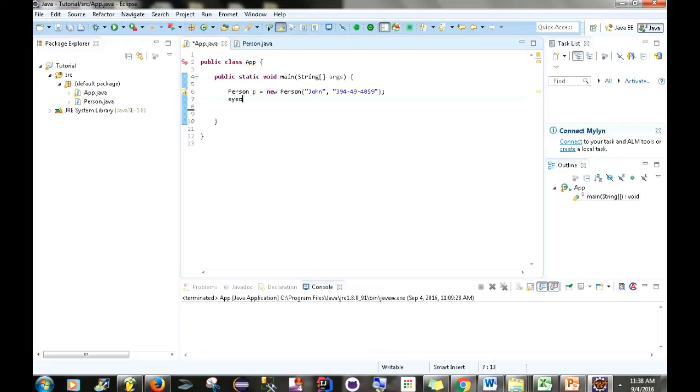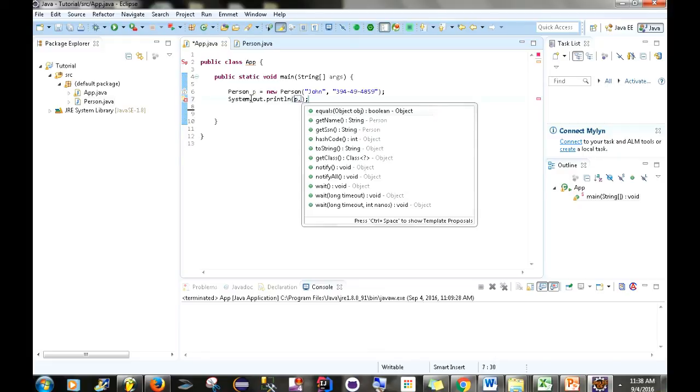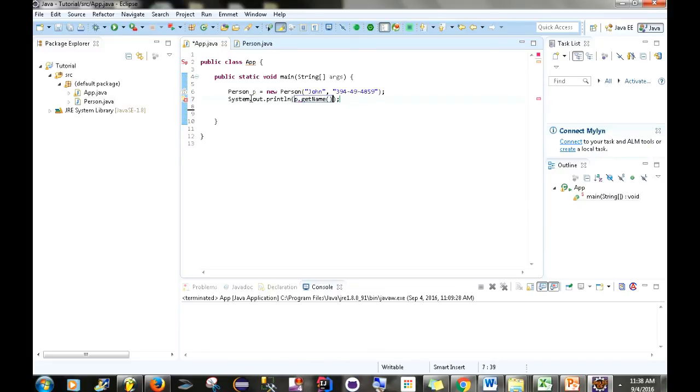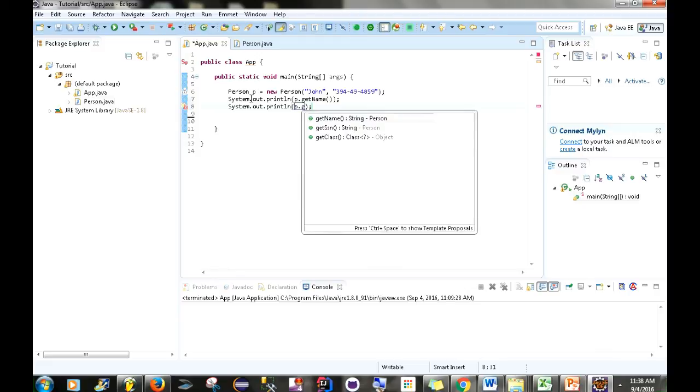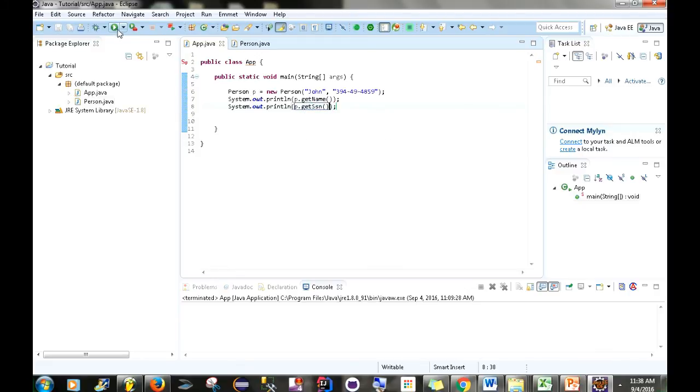All right. So, what we want to do now is just sysout p.getName, sysout p.getSSN. And you obviously know what this application is going to return, just a name as well as a social security number. So, what we have here is an immutable object of person.